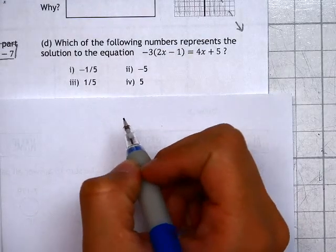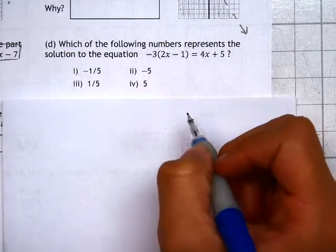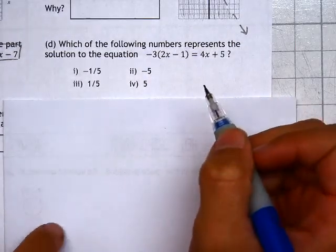For concept 1, question D, we're going to solve the equation that you see written out: negative 3 times 2x minus 1 equals 4x plus 5.